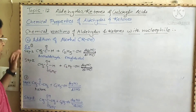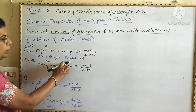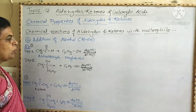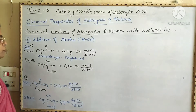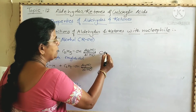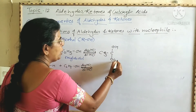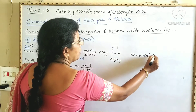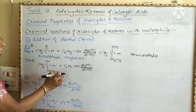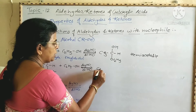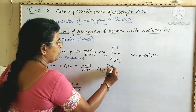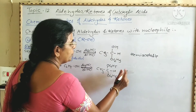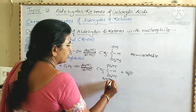For example, when acetaldehyde is treated with ethyl alcohol in the presence of dry acid and dilute HCl, first formation of hemiacetal takes place: CH₃-C(OC₂H₅)(H)-OH. This hemiacetal is unstable. Then in the second step, this hemiacetal reacts with a second molecule of ethyl alcohol to form CH₃-C(OC₂H₅)(H)-OC₂H₅. This product is the acetal, which is stable.